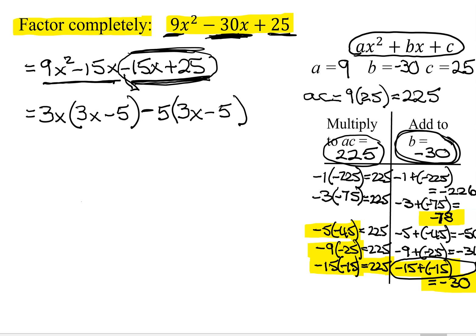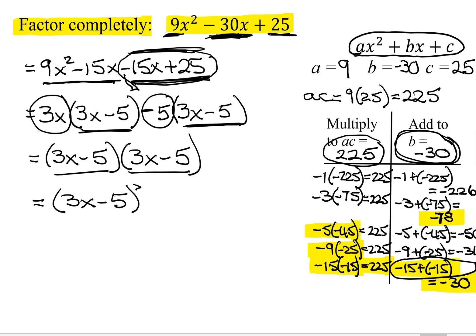So now is this binomial the same as this? Yes. So that's our common binomial factor that we pull in front. And what gets left behind? 3x minus 5. So now I factored my polynomial, but notice in this case, this binomial is the same as this. So we can write this as 3x minus 5 all squared.